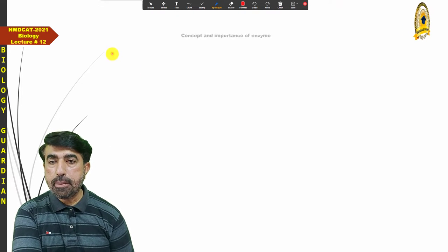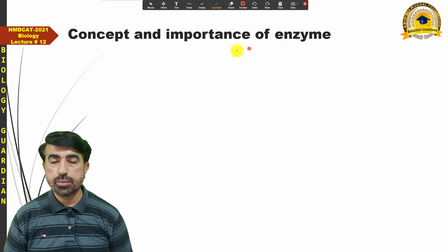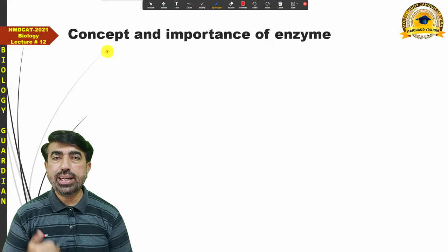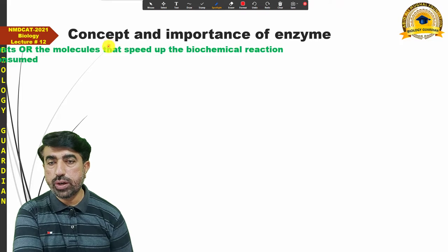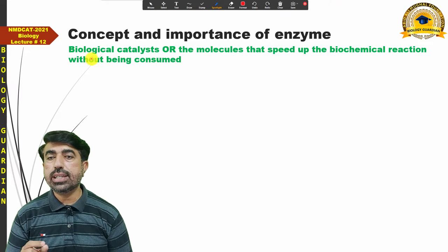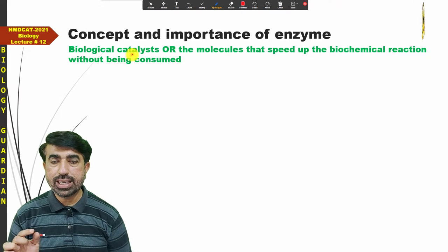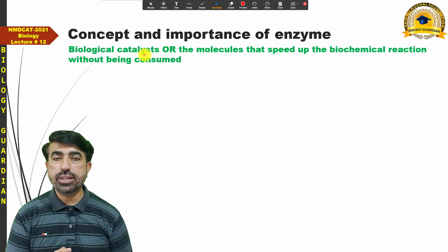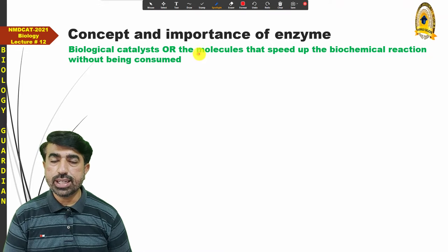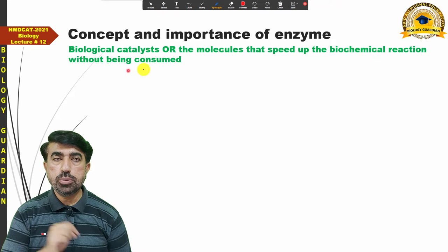First of all, we will talk about the concept and importance of enzymes. What are enzymes and what are they for? To define enzymes, you can use two words: enzymes are biological catalysts. This is a common definition. Alternatively, they are the molecules that speed up the biochemical reactions without being consumed.